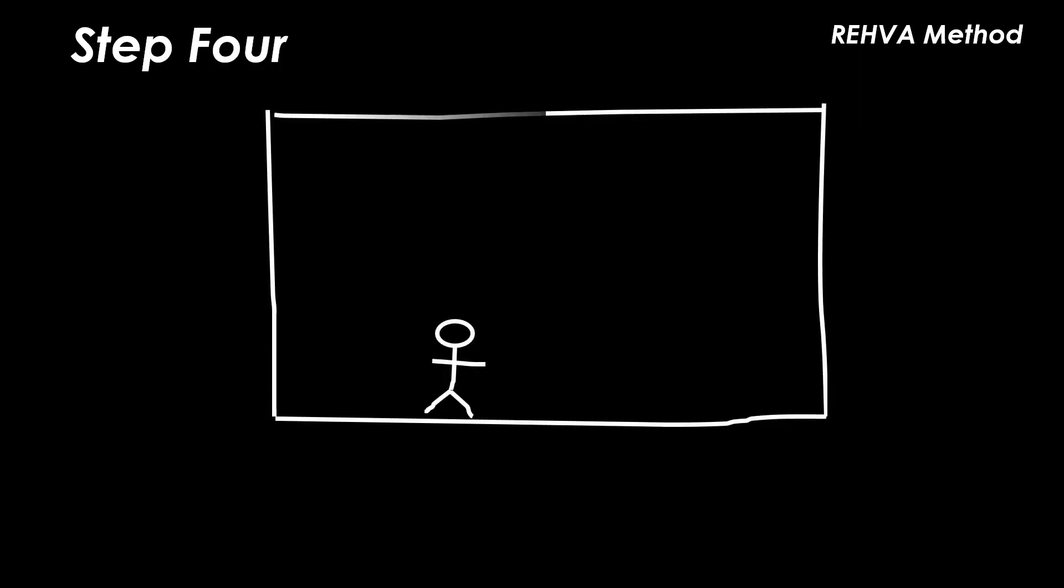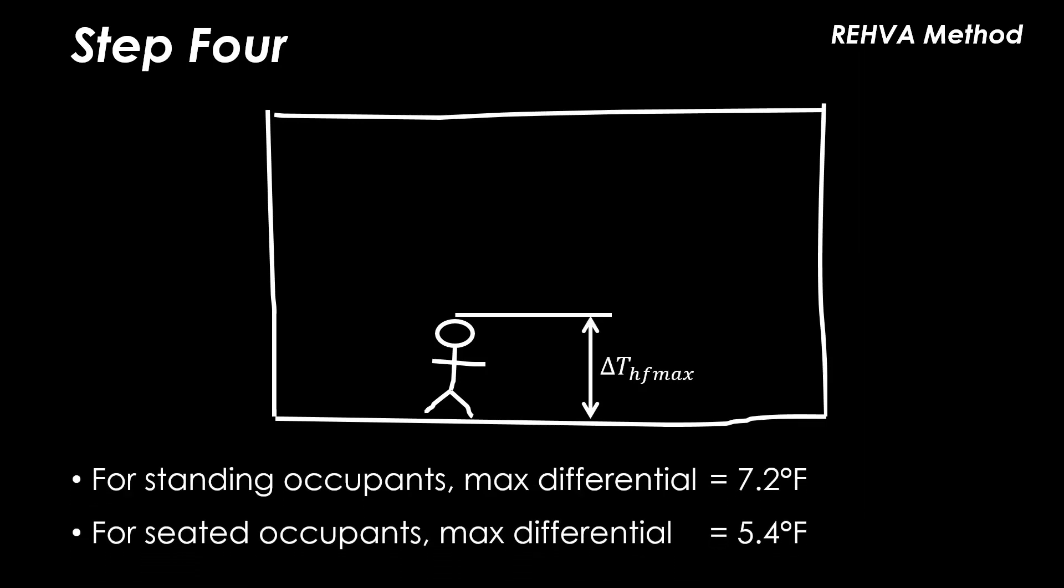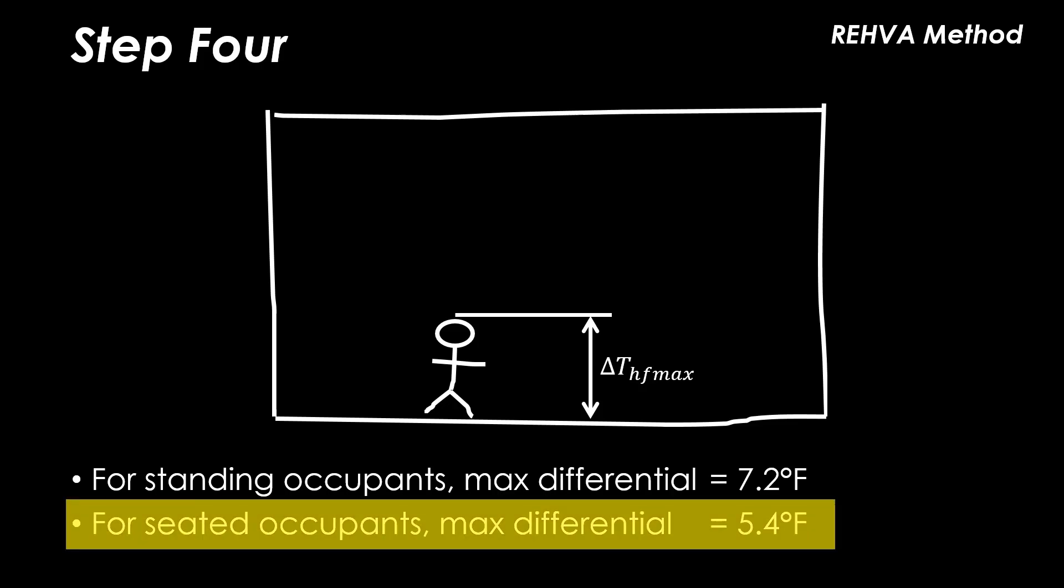In step four we must determine the maximum allowable temperature gradient, Delta THF Max. This is the vertical temperature difference between foot and head level. Note that a high differential could result in discomfort. ASHRAE Standard 55 2017 can be used for guidance but for standing occupants a 7.2°F differential is recommended and for seated occupants 5.4°F.